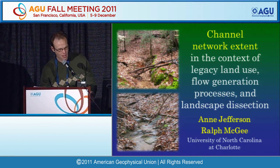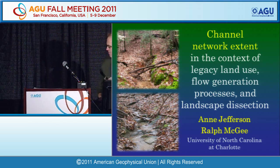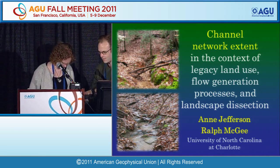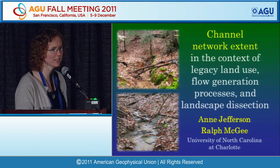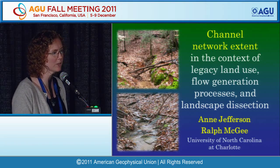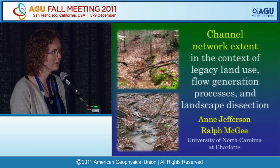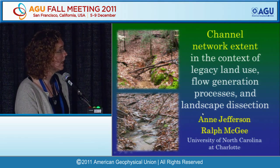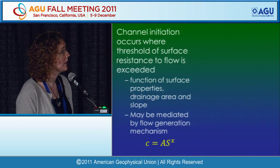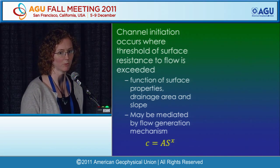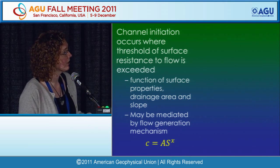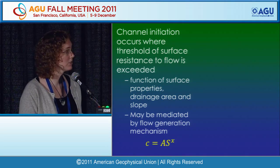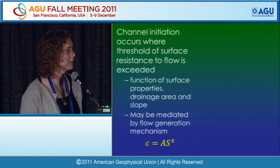The next speaker is Anne Jefferson, whose talk is titled Channel Network Extent in the Context of Legacy Land Use, Flow Generation Processes, and Landscape Dissection. She picks up on the theme of humans' lasting imprint on landscape form and the connectivity theme, since channels and water routing are directly related to connectivity. She begins by discussing what we know about controls on where channels should be found in a watershed, noting that over the last 20 years there has been substantial work on channel initiation as a function of upslope drainage area, contributing area, local slope, and surface properties such as vegetation, roughness, and soil characteristics.